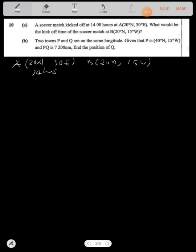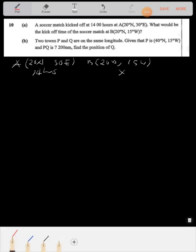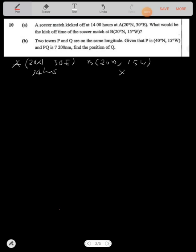What would be the kickoff time for the soccer match at B? At B we don't know. What we're going to do is, you can tell from here that we're going to place A and B on the same latitude but they're in different longitudes. So we need to find the difference in longitudes. Now because these are in different hemispheres...